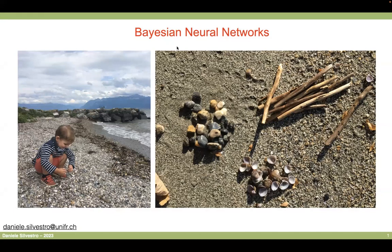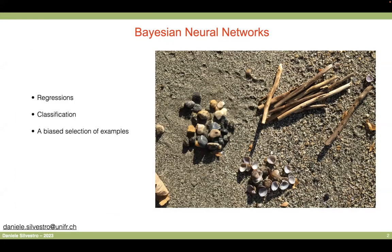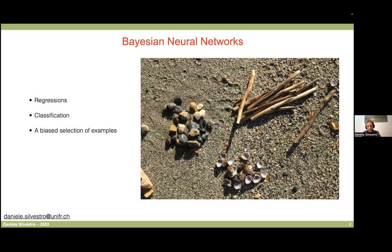Today I would like to talk about Bayesian neural networks. To do that, I'll cover three main topics: regressions — starting from standard regressions and then going into how neural networks can be used for regressions — classification, and then a biased selection of examples of recent studies that I've been involved in using Bayesian neural networks in biological research.